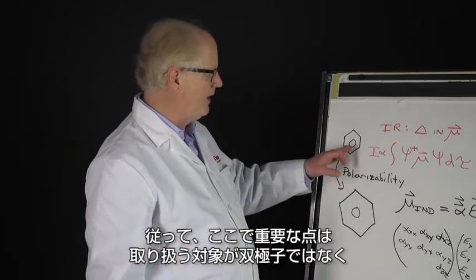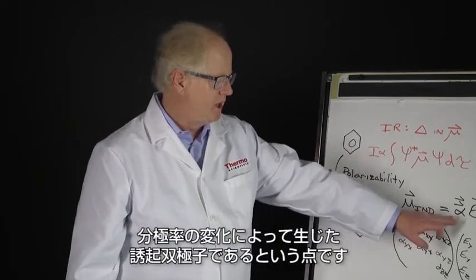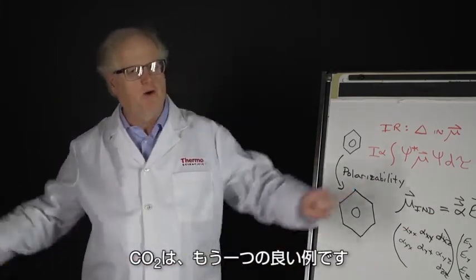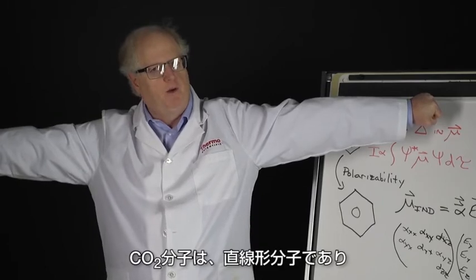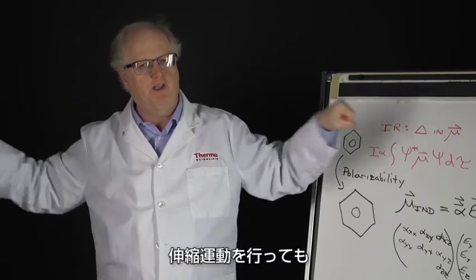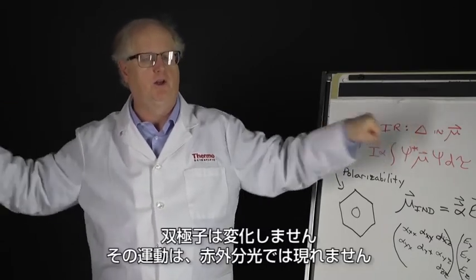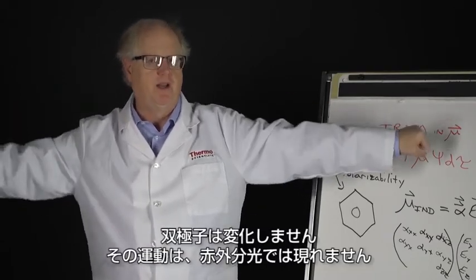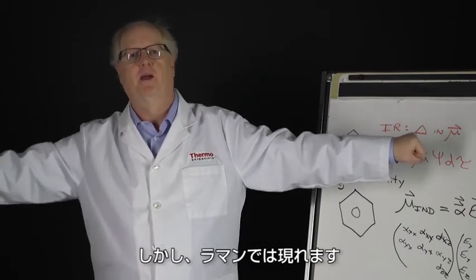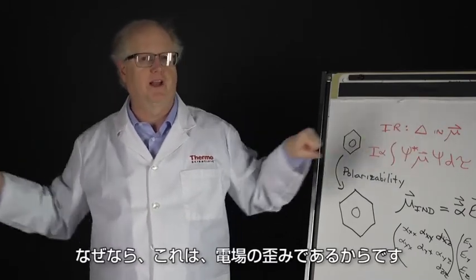CO2 is another great example. The CO2 molecule, which is a linear molecule, when it undergoes this stretching motion does not change dipole. You will not see that motion in the infrared, but you will see it in the Raman because this is distorting the electric field.